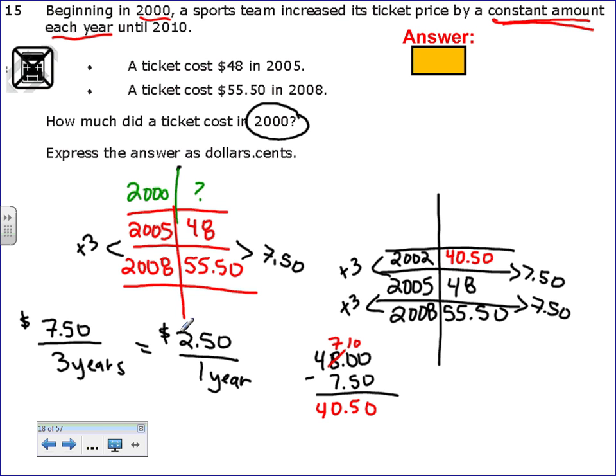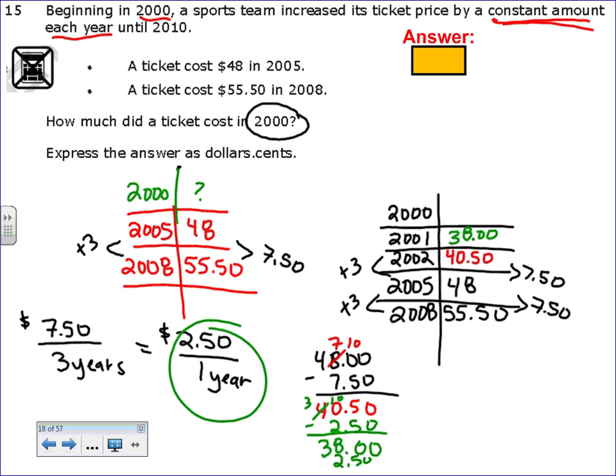I already know that it's $2.50 every year. So if I take 40.50 and I subtract 250, that's going to tell me the price in 2001, which is 38. And if I go back another year, minus 250, I'm going to end up with $35.50.